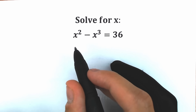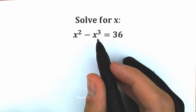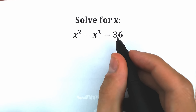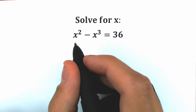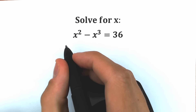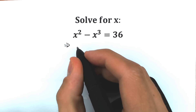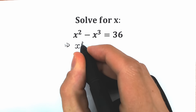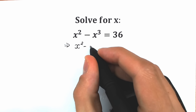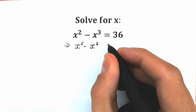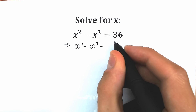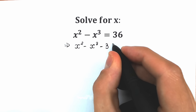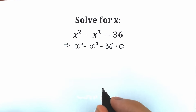Let's solve this challenge: x squared minus x cubed equal to 36. First of all, let's bring this 36 from the right side to the left side. As a result, we will have x squared minus x cubed minus 36 equal to 0.